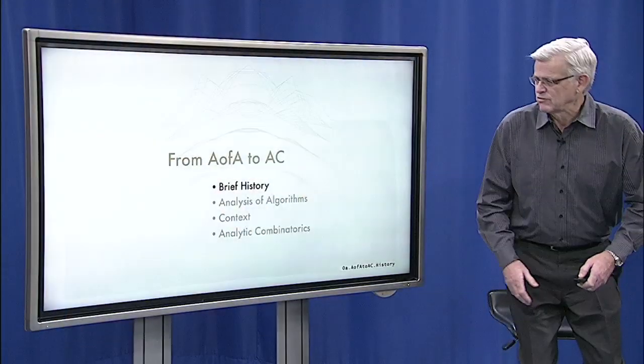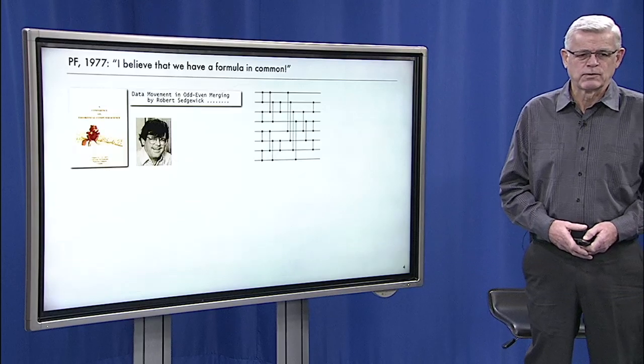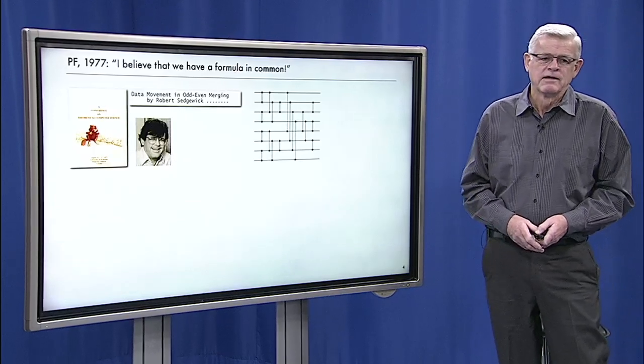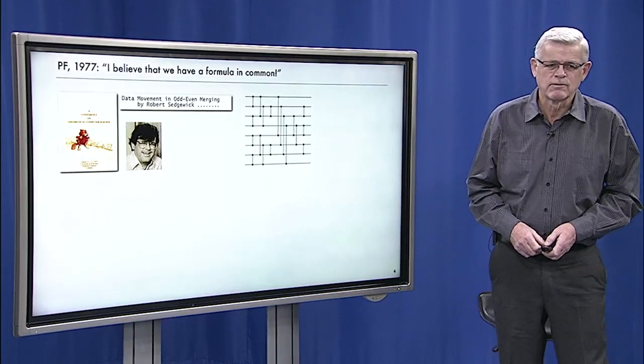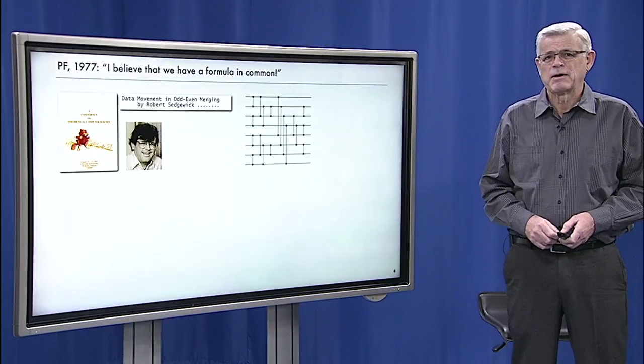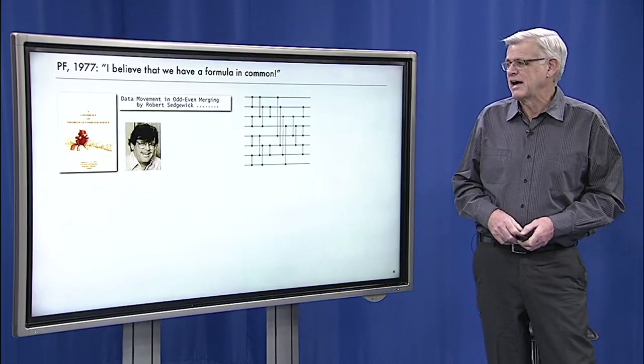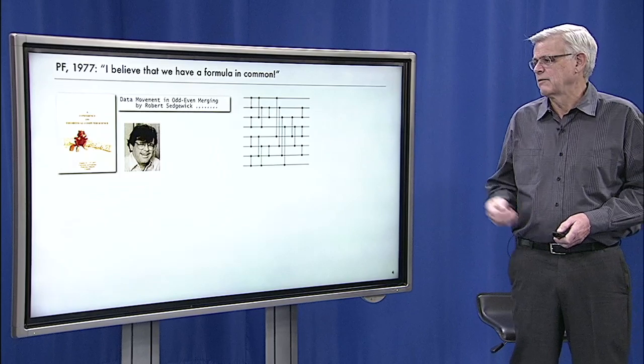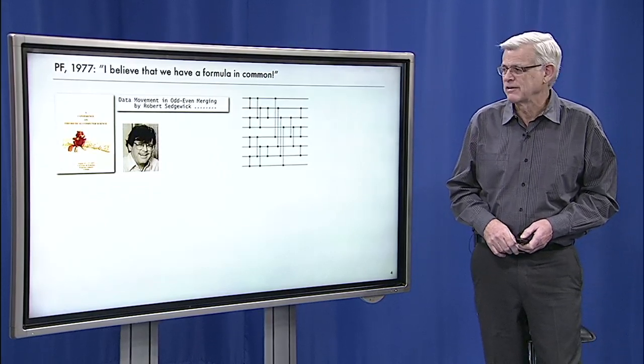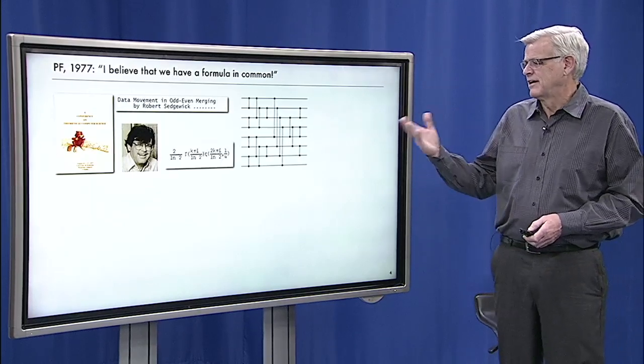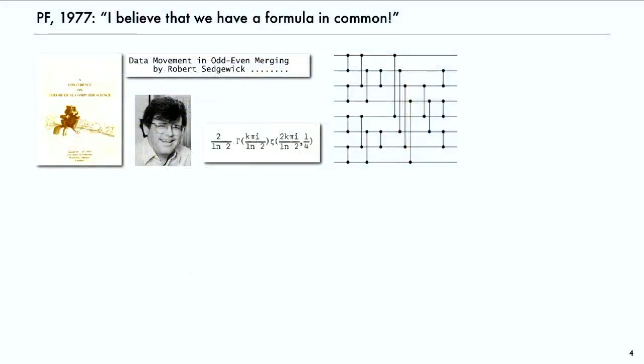I'll start off with a brief history to try to give some context for how we got there. I first met Philippe in 1977. My first research paper that I wrote after getting my PhD was on an algorithm called odd-even merging. I was very proud to have developed this formula that involves the gamma function and the zeta function. It gives a precise description of the performance of this particular algorithm.